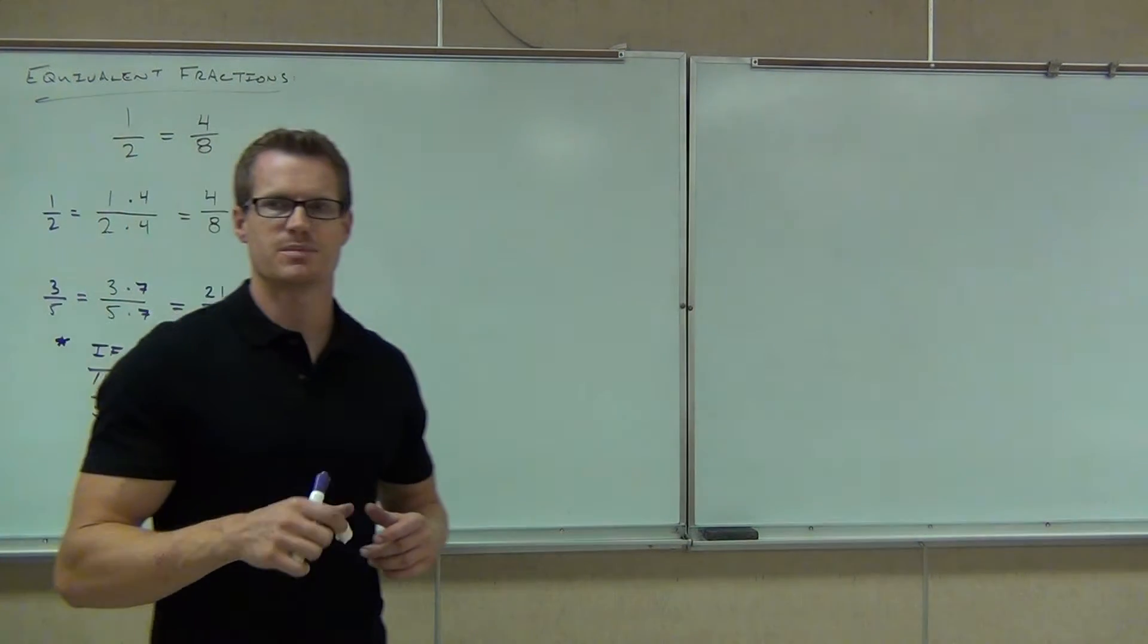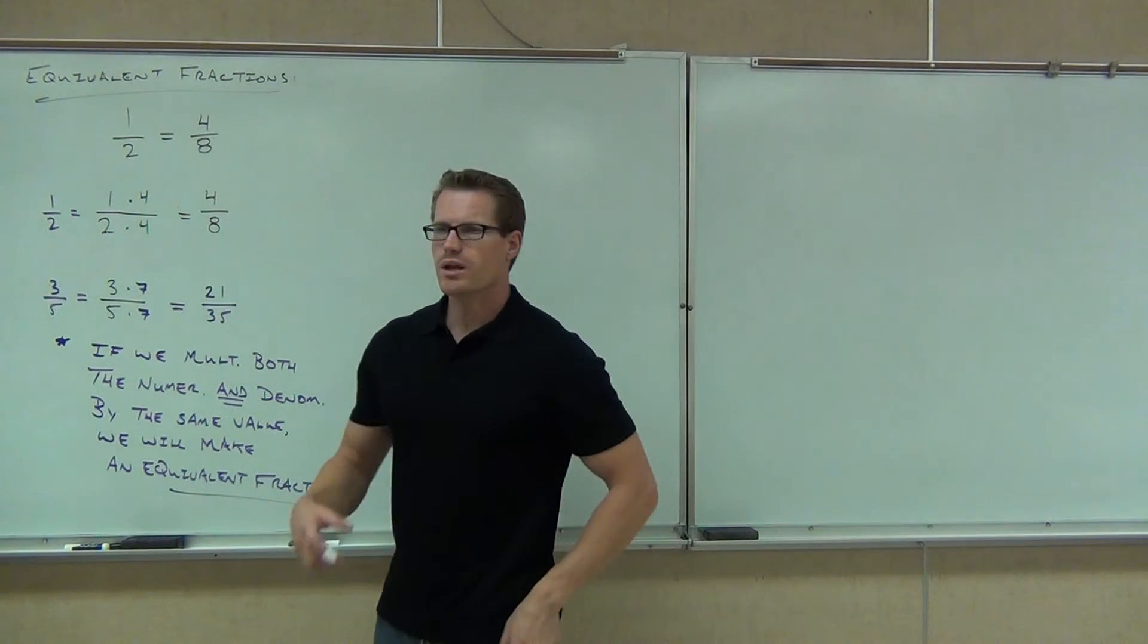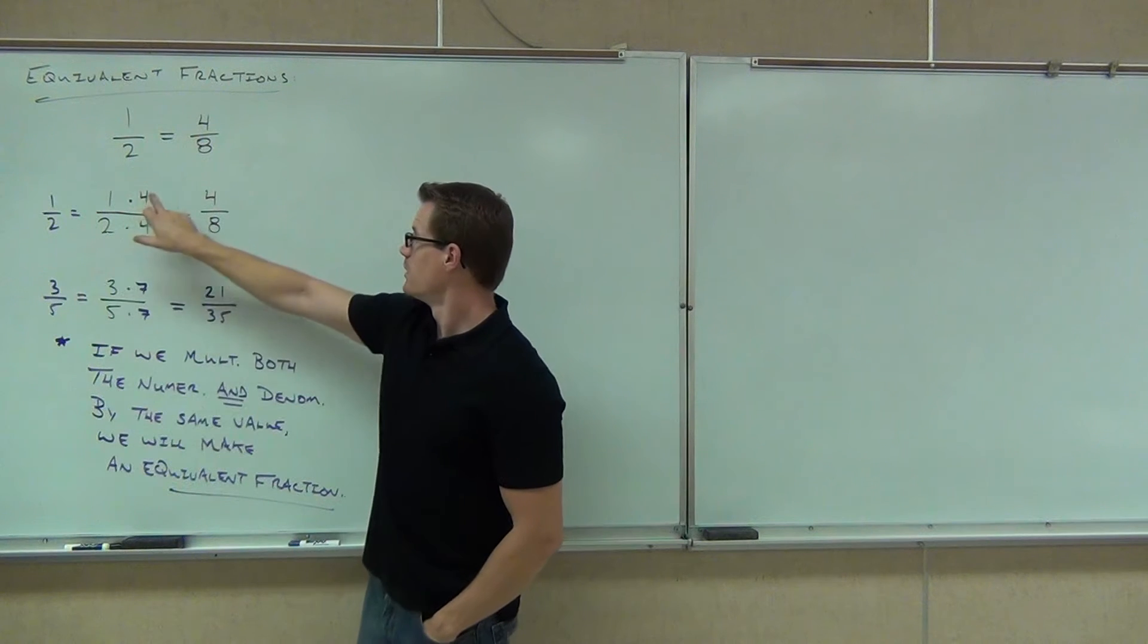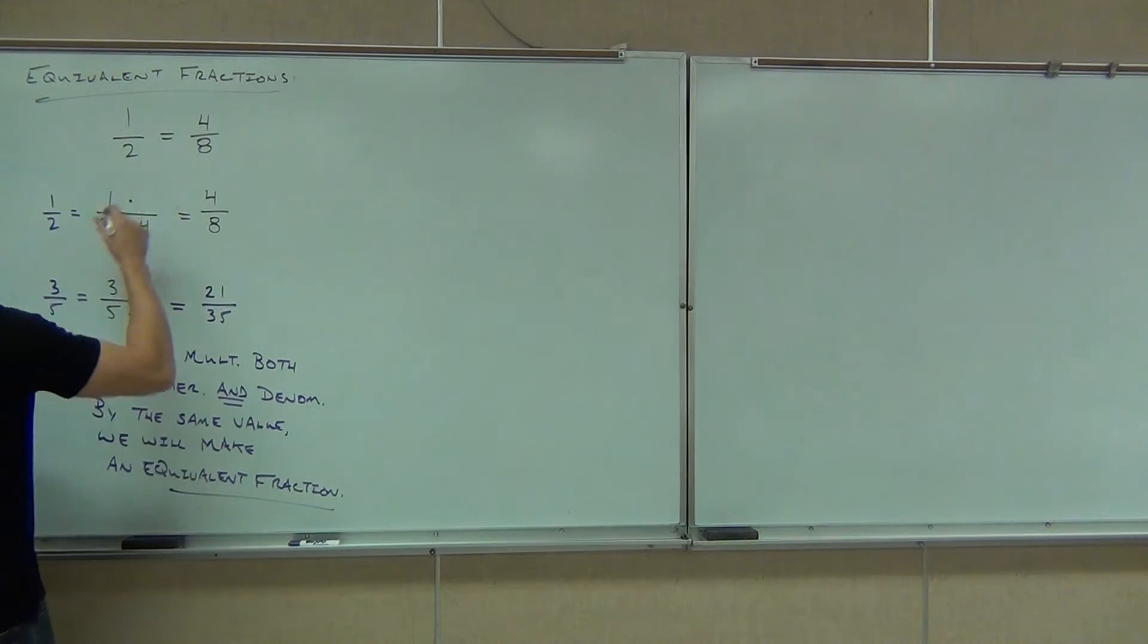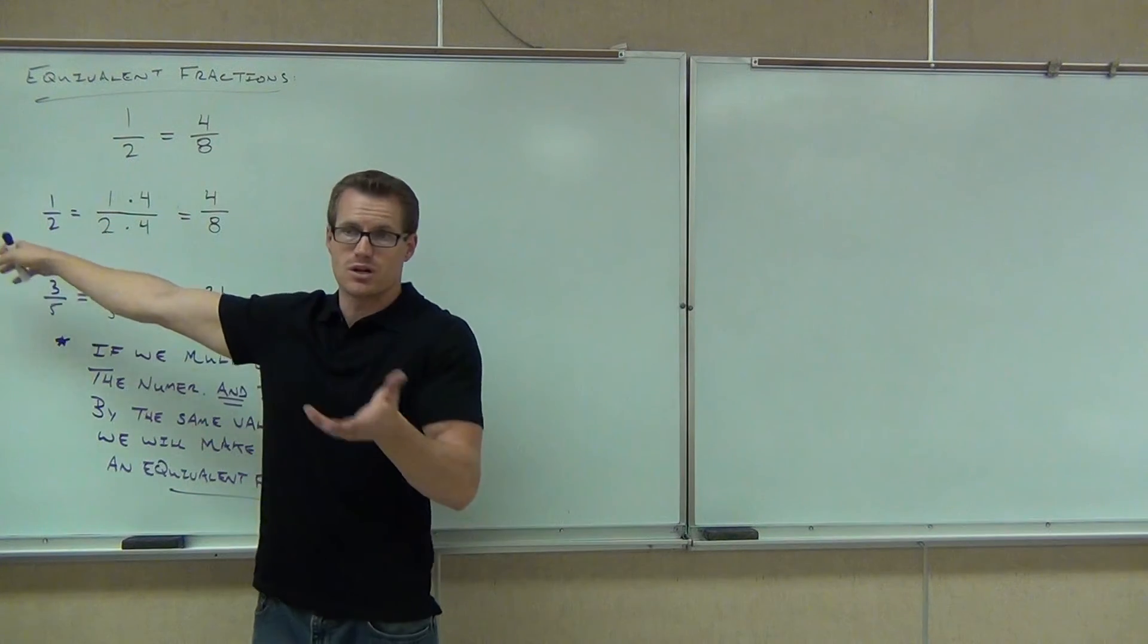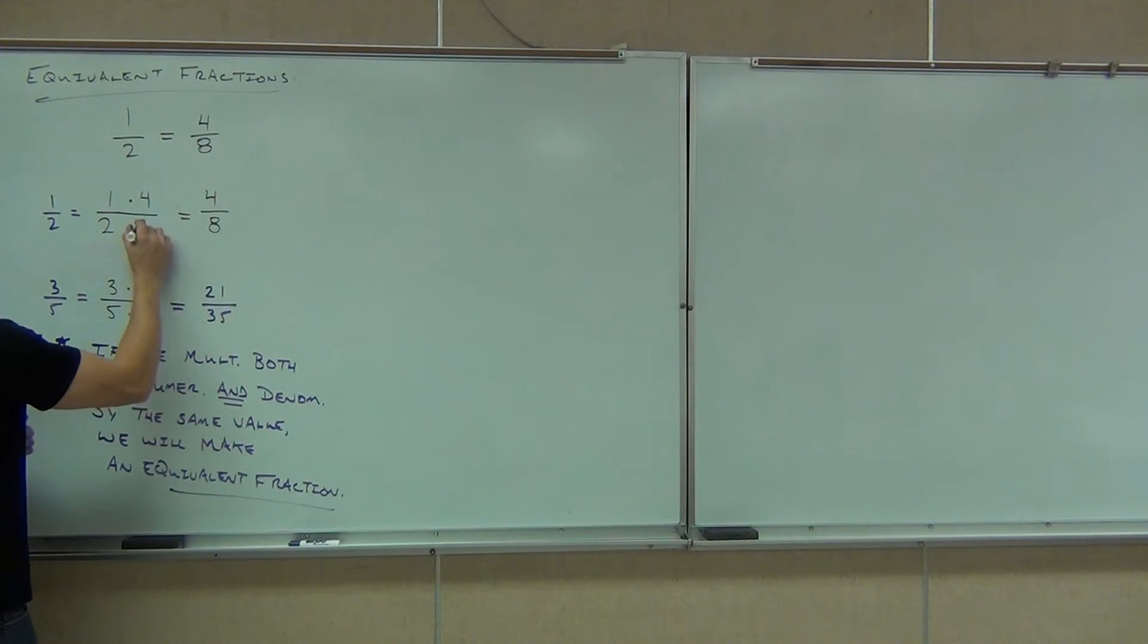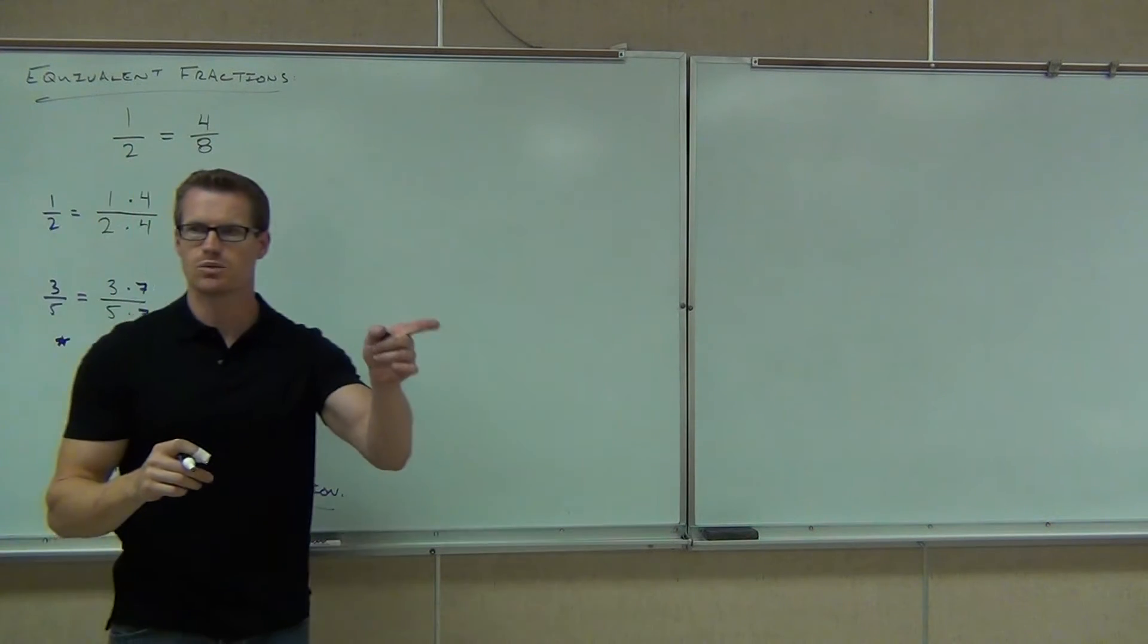Now, I want to show you a couple things to make sure you see what's going on before we continue any further. The first thing I want you to see is why this actually works. Would it work if I multiplied just the top by a number or just the bottom by a number and forgot the other one? No. For instance, if I didn't multiply the top by 4, would that be the same value as 1 half? No. So why does it work that when I multiply both of them by the same number, it's still equivalent? Why? Because they're equal. They have to be equal because they're equivalent.